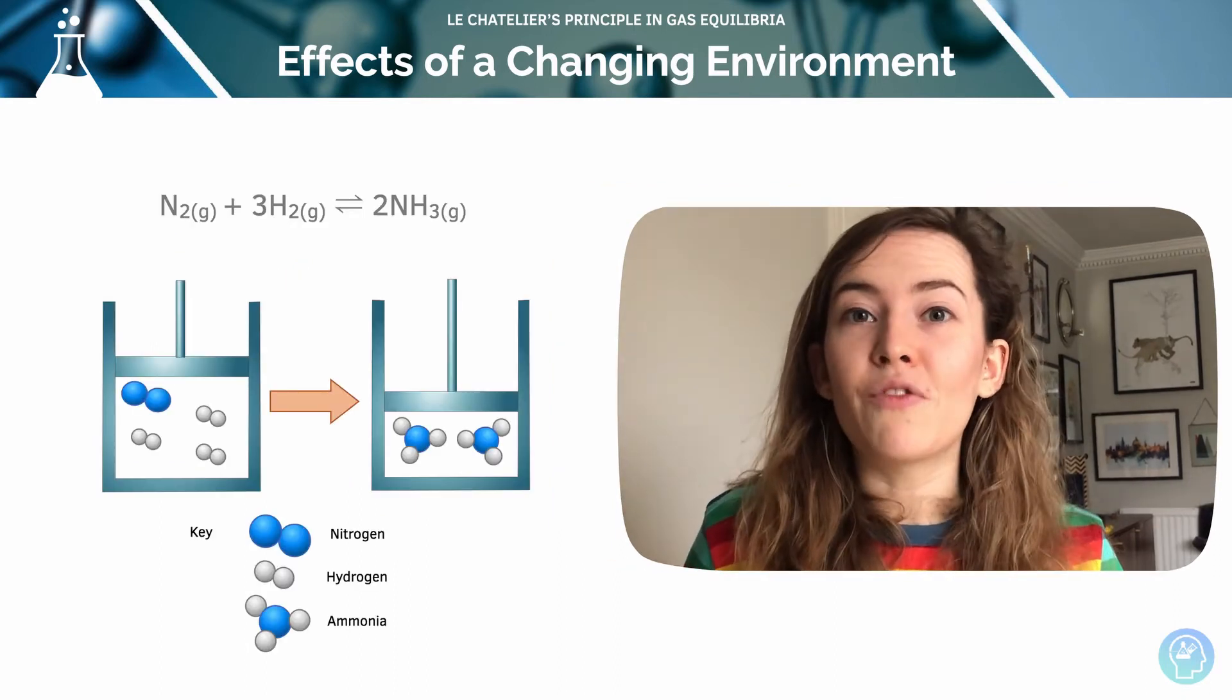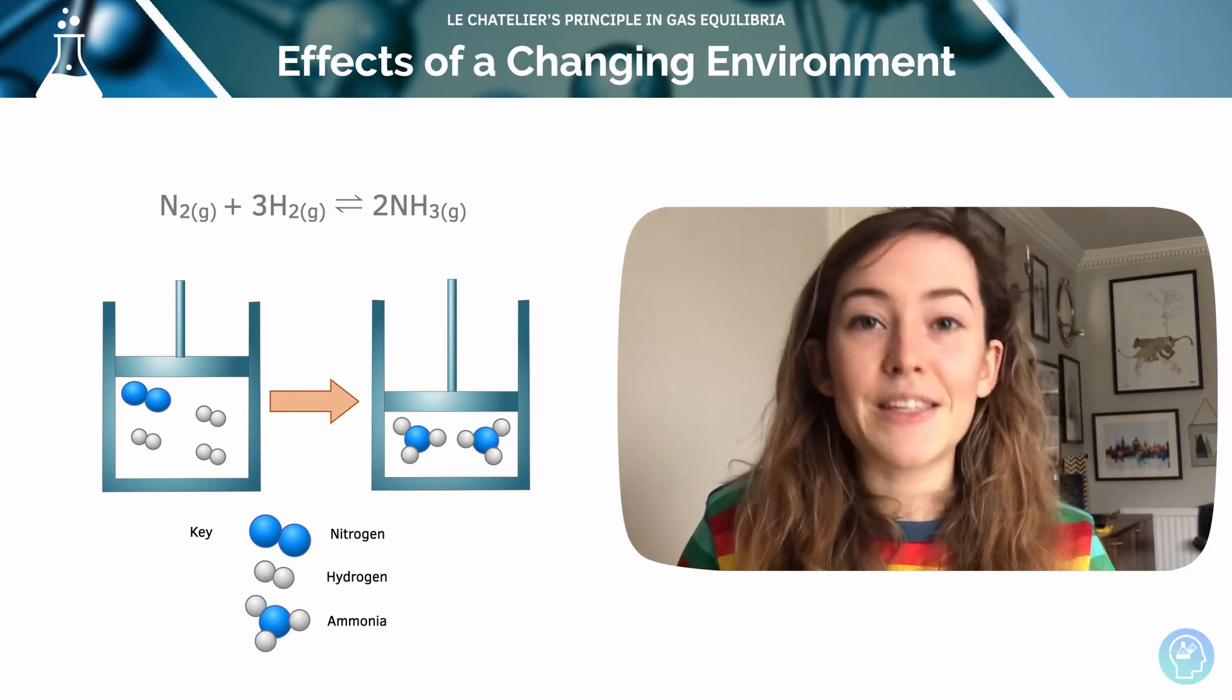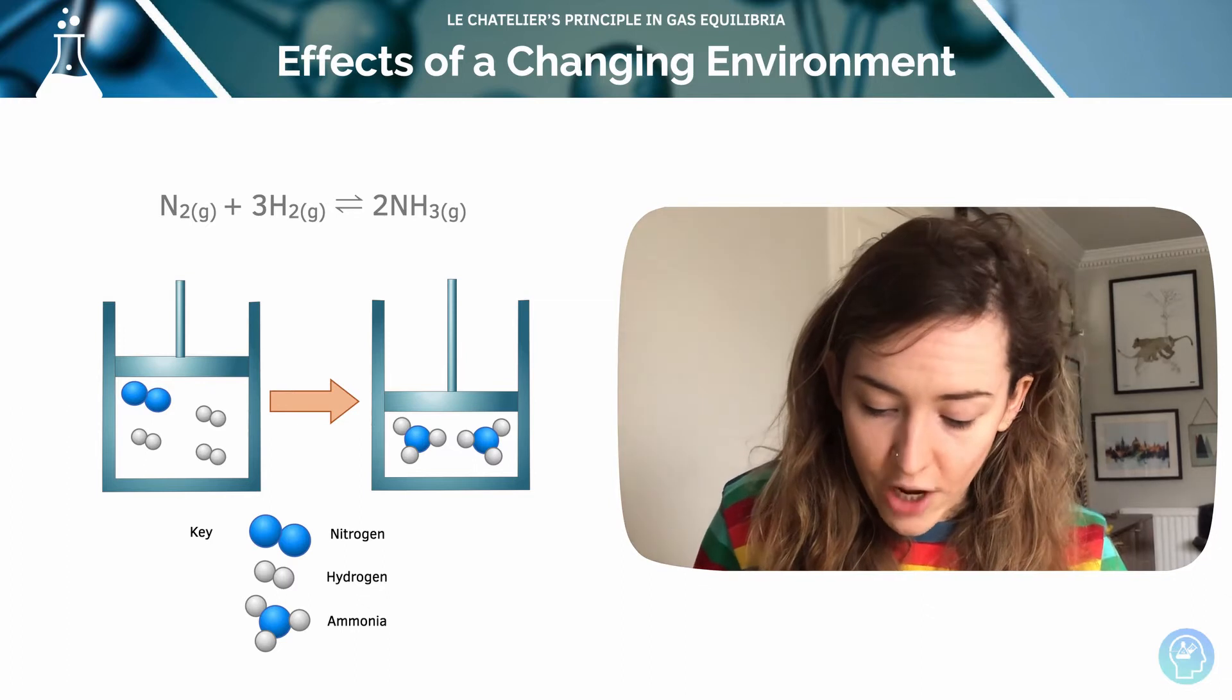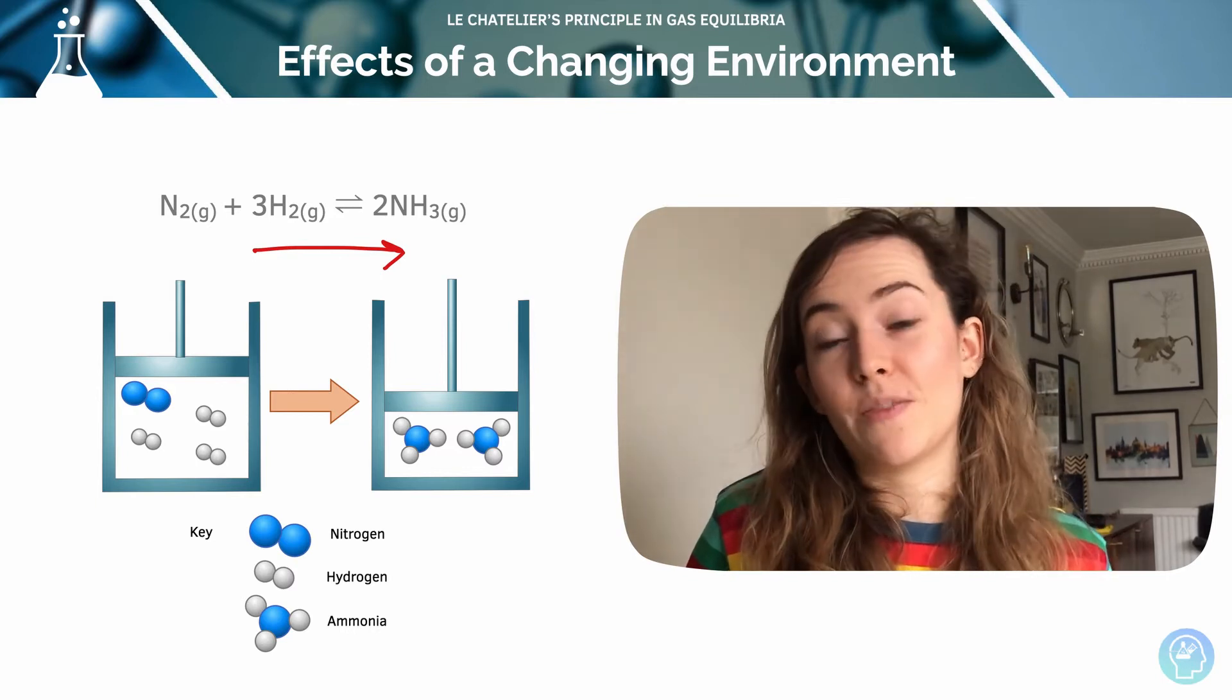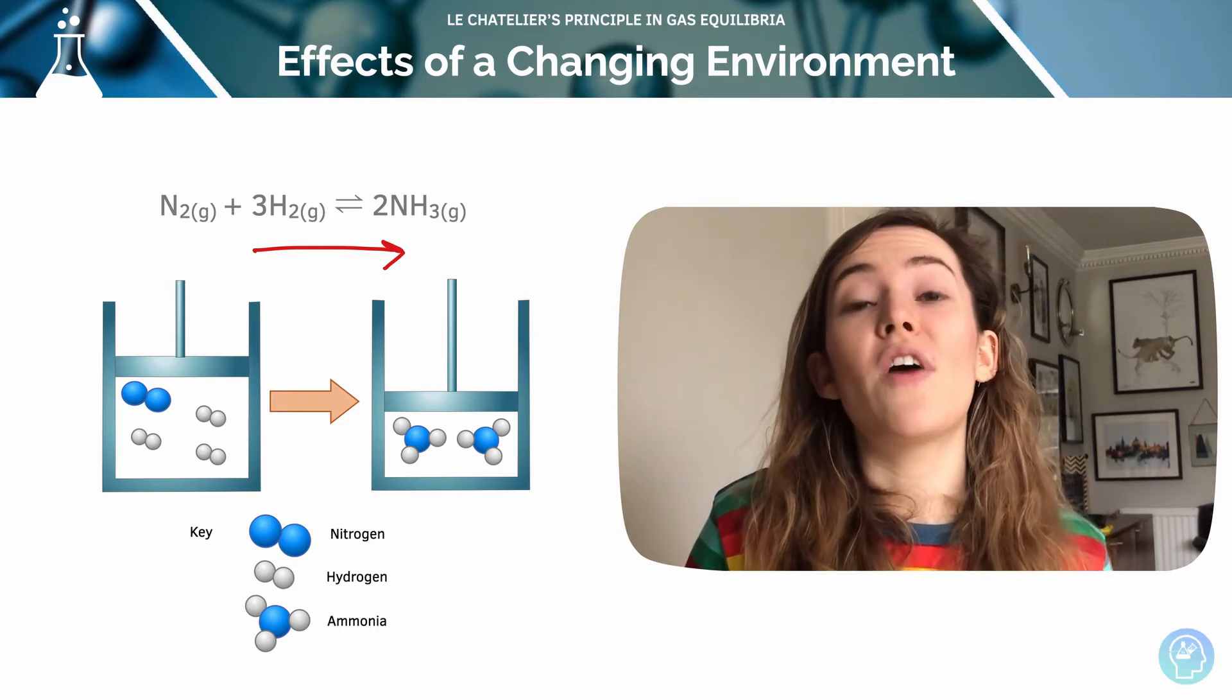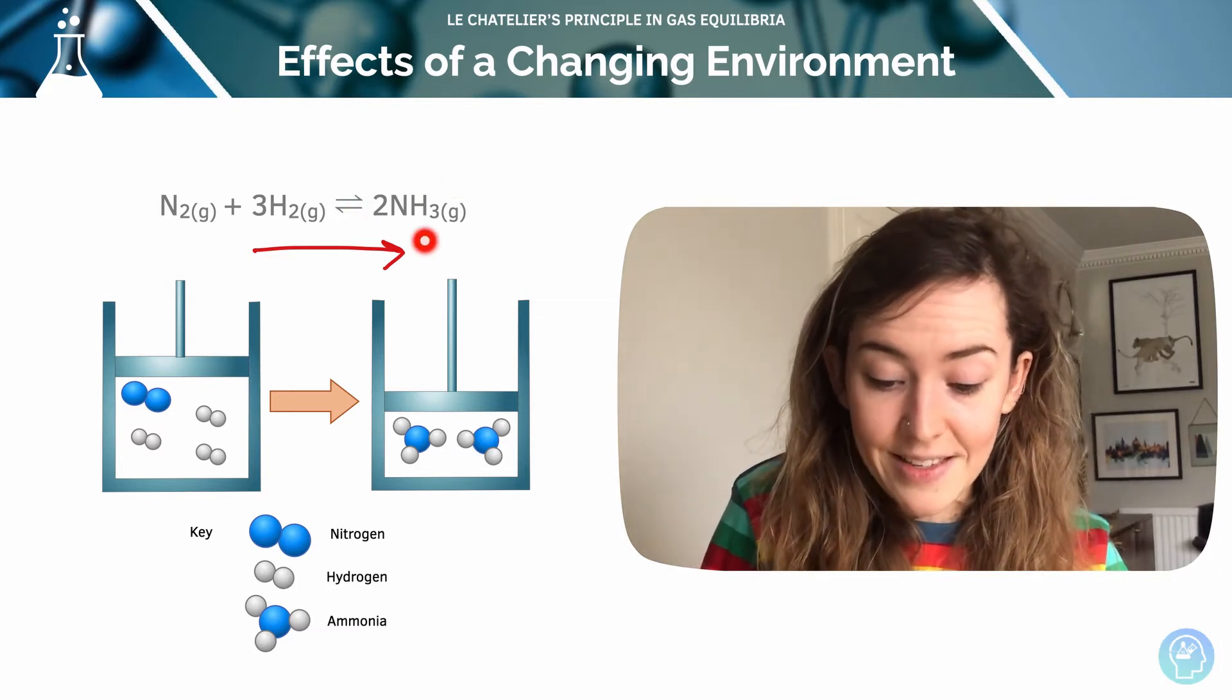Here's an example of the Haber process. Everything is in gaseous state. And if we increased the pressure on this system, then it's going to shift to the forward reaction. Because to oppose the change, following an increase of pressure, it's going to want to oppose that and reduce the pressure. So it's going to favor the forward direction, which has a product with the least gas moles.